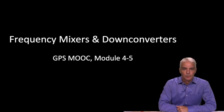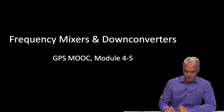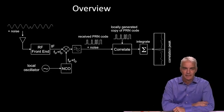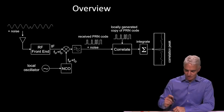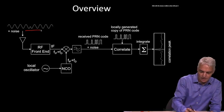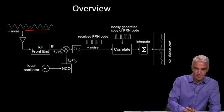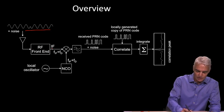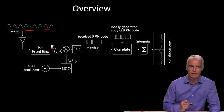In the previous video we saw how at the front end the signal started off at the frequency from the satellite and ended up at an intermediate frequency, and then we had something called a mixer that mixed it down to baseband, as shown in this slide here for review. In this video we're going to look at how does that happen — how does it work that we have a signal coming in at L1 frequency from the satellite and something happens inside this front end that mixes it down to an intermediate frequency.